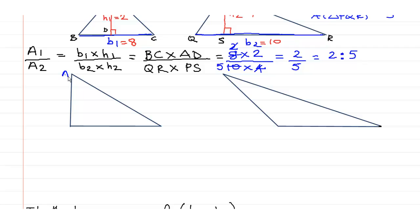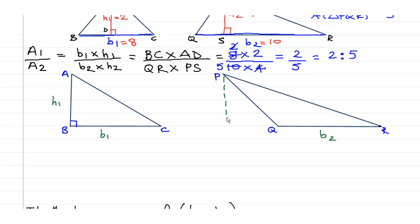Let us take a second example. Let us say this is a right-angle triangle ABC where angle B is a right angle, and this is an obtuse-angle triangle PQR. It is very important to remember that in right-angle triangles, the sides containing the right angle are the bases and the heights. The hypotenuse AC is not the base or the height. So if you consider BC to be the base and AB to be the height, and over here QR is the base.